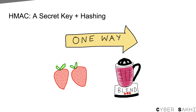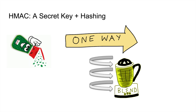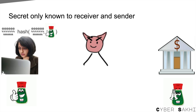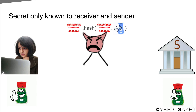Now coming to HMAC — imagine blending fruits for the hash as before, but you now also add a special secret ingredient. By adding the secret ingredient, the smoothie's color and taste change dramatically, and without that ingredient, the final flavor can't be matched. If joker intercepts an HMAC-protected message, he might flip bits in the ciphertext, but then he'll also need the secret to recompute a valid HMAC. Since he doesn't know the secret, no amount of guessing will help. The tampered HMAC won't match and the receiver knows something is up.